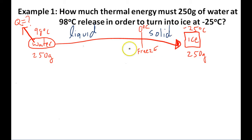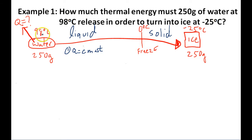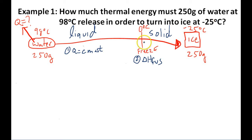In order to do this problem, we have to set up three different mini-problems. First, we'll use Q equals CM delta T to figure out how much thermal energy this water needs to release to bring its temperature from 98 to 0. In step two, we'll calculate the heat of fusion — the amount of energy required to convert the water into ice. Then in step three, we'll use Q equals CM delta T again to find how much thermal energy the ice must release to go from 0 to negative 25.